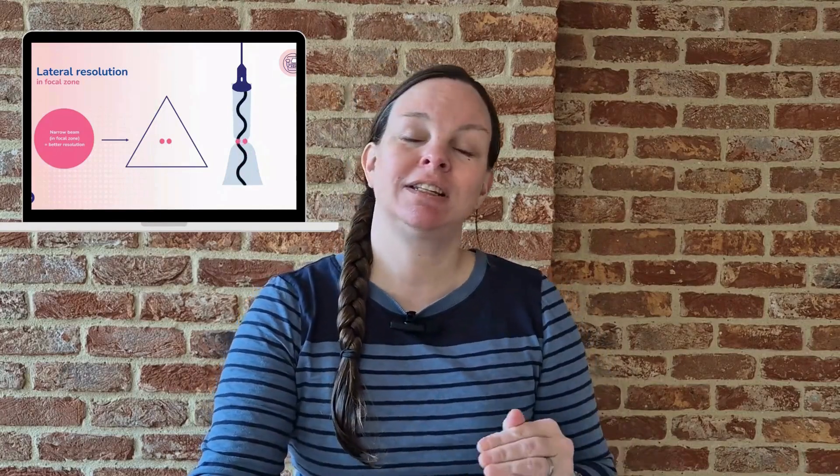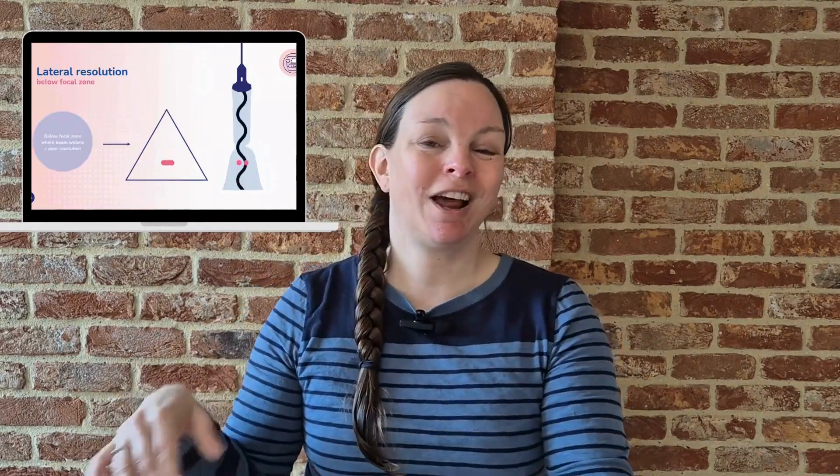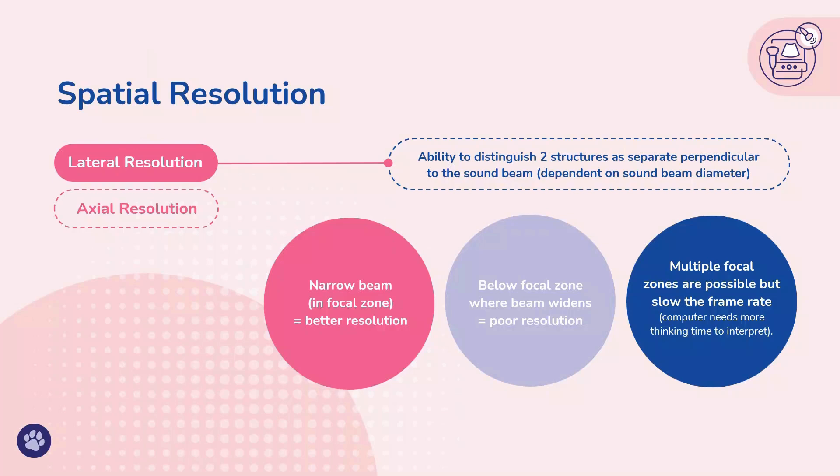The focal zone is where your lateral resolution is best — that means how well the machine can tell apart two structures that sit next to each other side by side at the same depth. But if the focal zone is too shallow or too deep, you're using a wider part of the beam and you lose that sharpness.